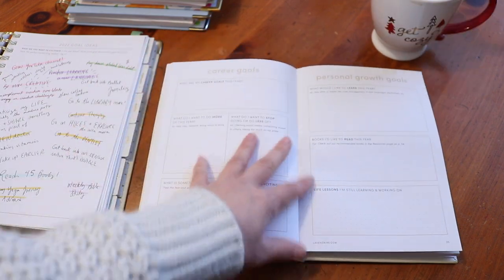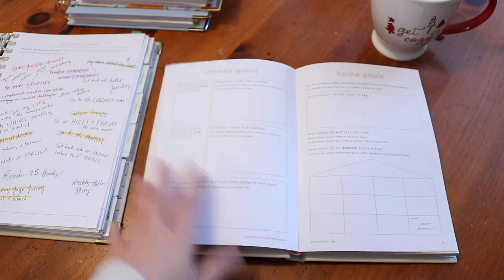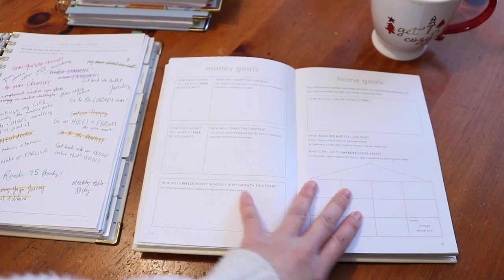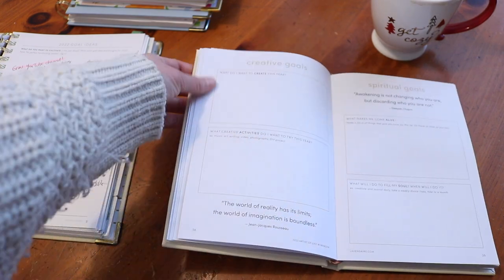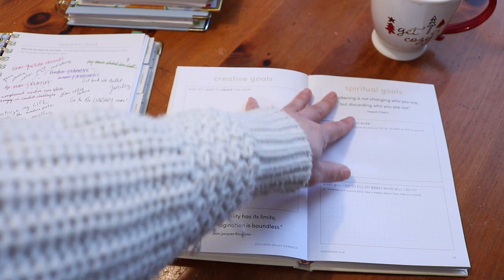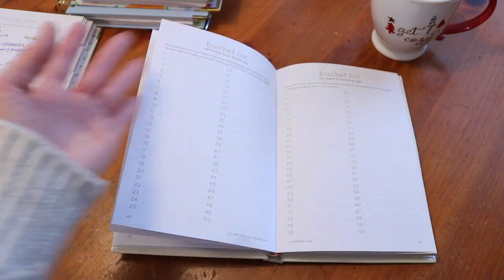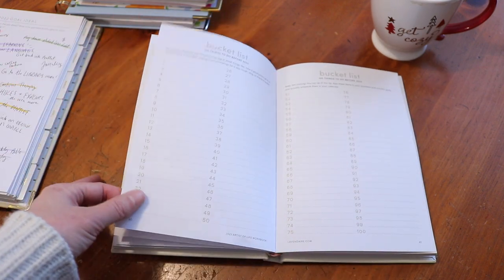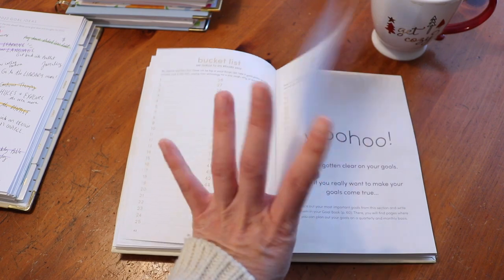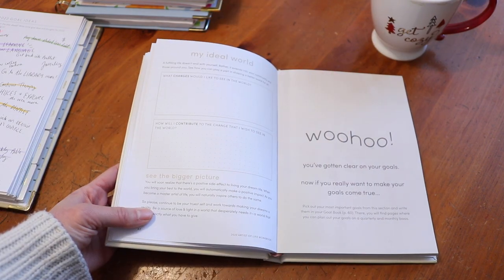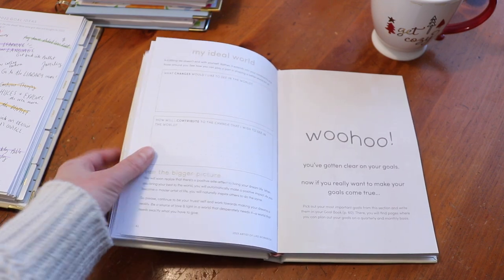Here are all our different goal areas. We have career goals, personal growth goals like what we want to learn and read. Money goals, home goals. I rarely set home goals, so this will be good for me, especially since I just moved. Creative goals, which I definitely have. Spiritual goals, bucket list, 100 things that I want to do in the new year. This doesn't have to be super complicated. And then my ideal world. That's really sweet, especially in these trying times. This will be meaningful to work through.